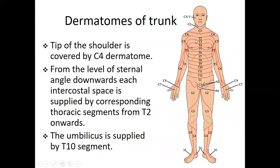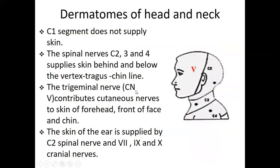Now for the dermatome of the trunk. The tip of the shoulder is covered by C4. From the level of the sternal angle downward, each intercostal space is supplied by the corresponding thoracic spinal segment from T2 onward - T2, T3, T4, T5, T6, T7, T8, T9, T10. The umbilicus is supplied by T10.